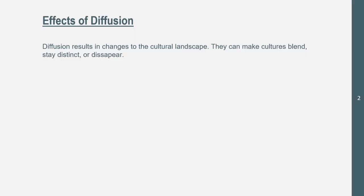Let's get into this. Effects of diffusion. Diffusion results in changes to the cultural landscape — we know this already. They can make cultures blend, stay distinct, or disappear. Cultures can become extinct or be distinct. An extinct culture would be where we have no people a part of a culture anymore. This doesn't happen that often — a culture's population will probably be lowered, but usually it will never go fully extinct.